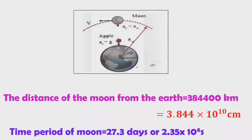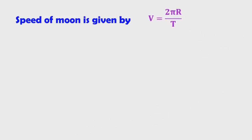The time period of the moon — the time taken by the moon to complete one revolution around the earth — is 27.3 days, or 2.35 × 10⁶ seconds. The speed of the moon is given by distance divided by time period: v = 2πr / T.